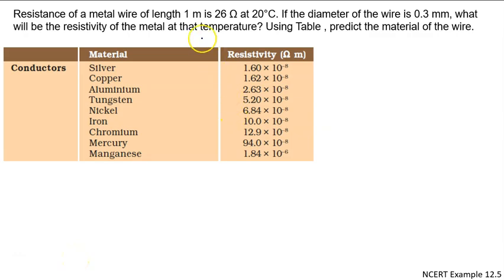This problem involves resistance of a metal wire of length 1 meter. The length is 26 ohm at temperature 20 degrees Celsius. If the diameter of the wire is 0.3 millimeter, in meters it will be 0.3 × 10^-3 meter.